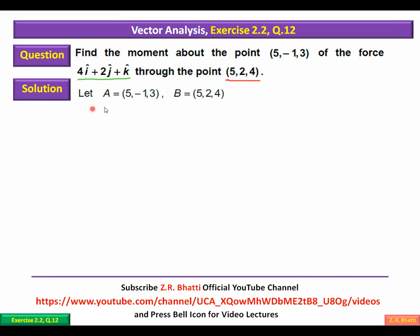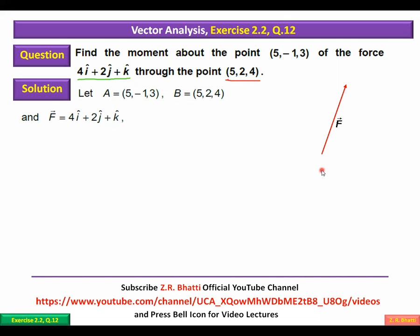Pehla point jo diya tha (5, -1, 3) — jis point ke about moment of the force maloom karna hai — usse hum A suppose karte hain. Aur yeh wala point jis se force pass kar rahi hai usse hum B suppose karte hain. Force ko F suppose karte hain: 4i + 2j + k. Diagram mein: force F hai, B woh point hai jis se pass ho rahi hai (5, 2, 4).